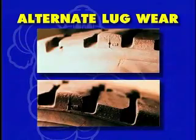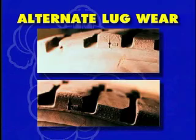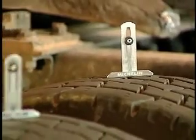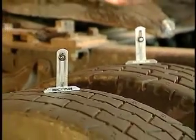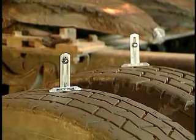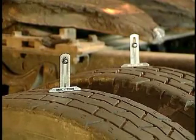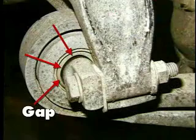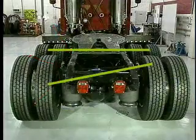With alternate lug wear, alternate tread blocks wear to different depths around the entire tire. This is usually seen symmetrically on every second or third block. These differences are created by uneven inflation pressures or mismatched tires in a dual assembly. This condition can be aggravated by worn suspension components or axle misalignment.